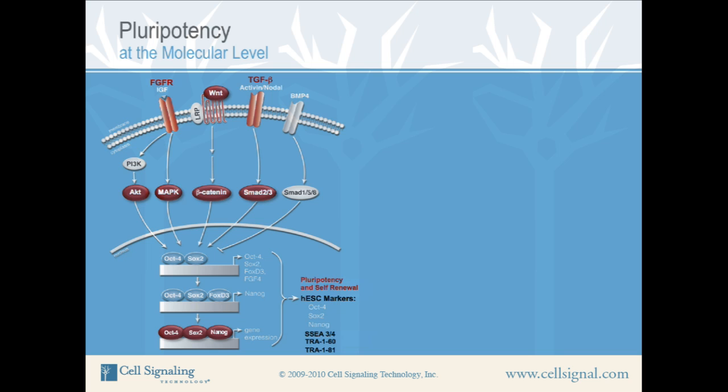Pluripotency and self-renewal are inhibited by the BMP4 pathway, which uses SMAD1, 5, and 8 to block transcription factor expression. The pathway shown is for human cells. Pluripotency in mice involves slightly different upstream signaling, primarily the LIF (leukemia inhibitory factor) and STAT3 pathway, but results in expression of the same key transcription factors.